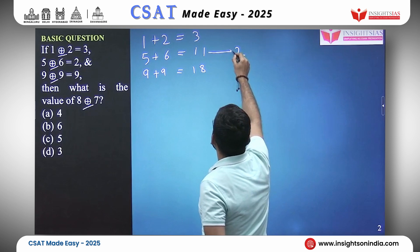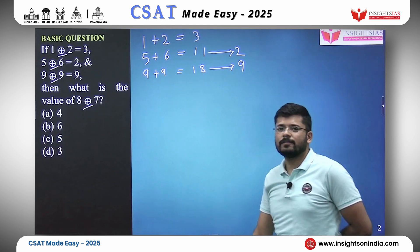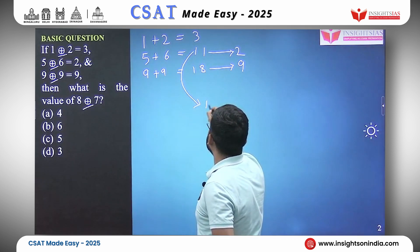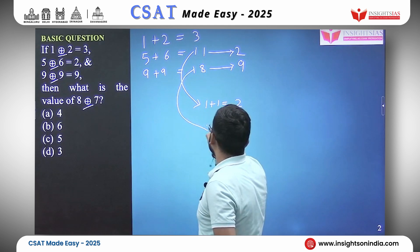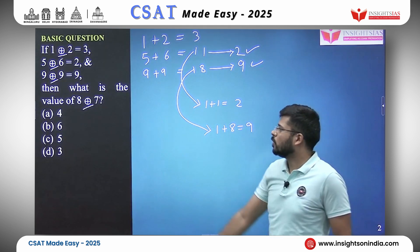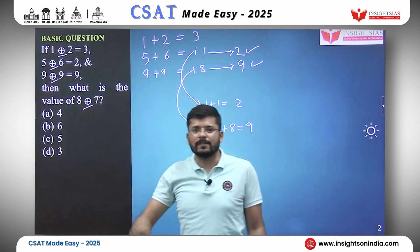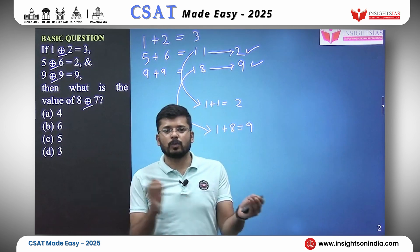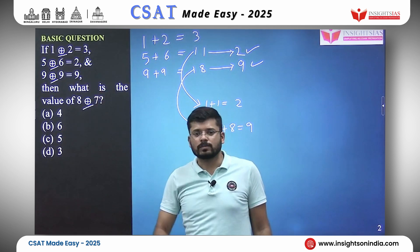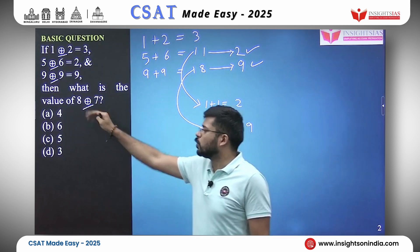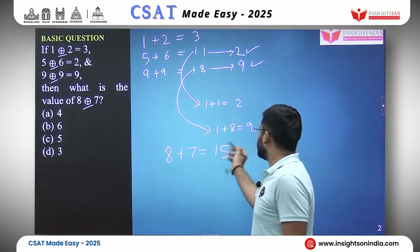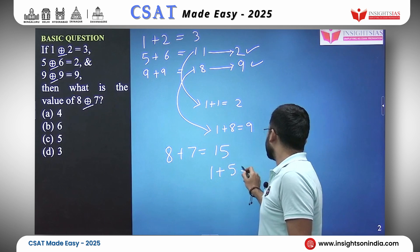Can we derive 2 from 11, and 9 from 18? Yes — it is the sum of digits. The sum of digits of 11 is 1 plus 1 equals 2, and the sum of digits of 18 is 1 plus 8 equals 9. So the notation adds the two numbers and then adds the digits of the result. For 8 plus 7 that is 15, and 1 plus 5 equals 6.